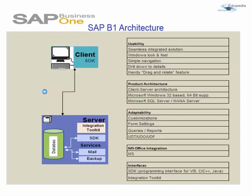The features of the SAP Business One architecture include usability, product architecture, application features, and seamless integrated interfaces. It has a Windows look and feel, simple navigation, and drill-down to details. That means when you see information such as a customer name and drill down, you get all the details related to that customer.